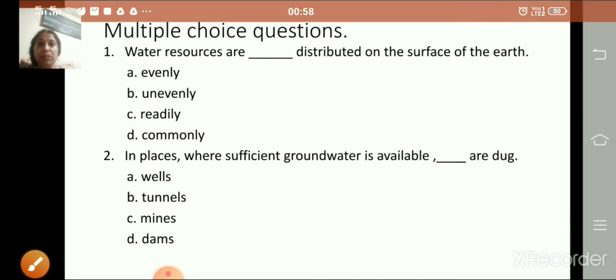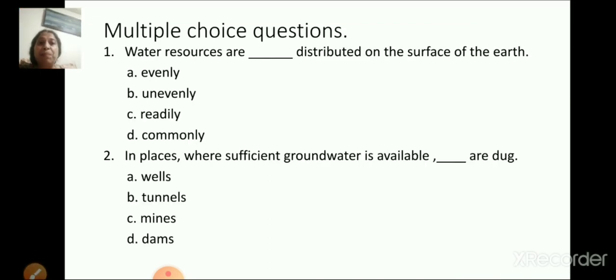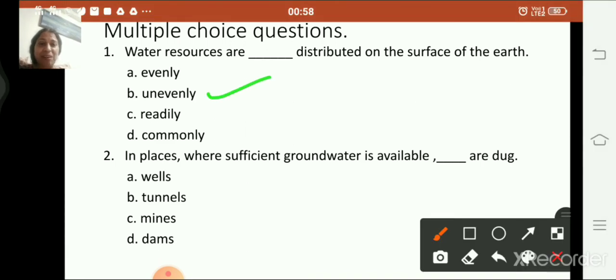So now we will do some objectives. Multiple choice questions. First one. Water resources are dash distributed on the surface of the earth. Options are evenly, unevenly, readily, commonly. So what is the answer? Very good. Second one. In places where sufficient groundwater is available, dash or dug. Options are wells, tunnels, mines, dams. So you all know the answer. Very good children.